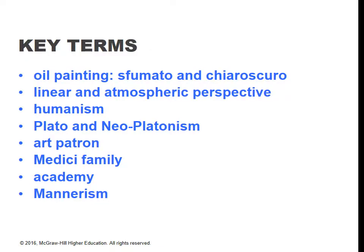Here are the key terms from the Renaissance chapter. Oil painting, sfumato, and chiaroscuro — related but not identical. Sfumato means smoky, and chiaroscuro is the light and dark. Linear and atmospheric perspective, which we've covered before. Humanism is this newfound sense of the dignity and importance of humankind. Plato and the importance of Neoplatonism — or more safely, just the importance of Plato's thought to the Renaissance, because it became newly available to them. The art patron is basically the one who can foot the bill for the art. The Medicis were the rich Florentine family, in and out of power during the Renaissance. The academy was a discussion group they set up. And Mannerism is the style that follows the High Renaissance, notable for sinuous forms and a flamboyant visual style.